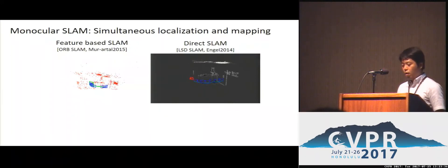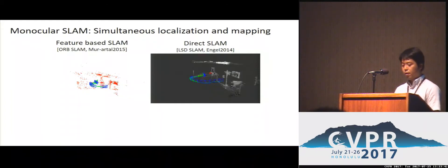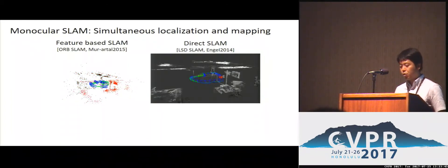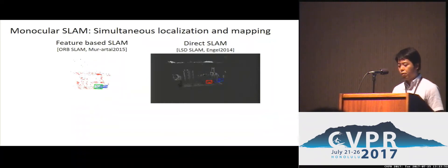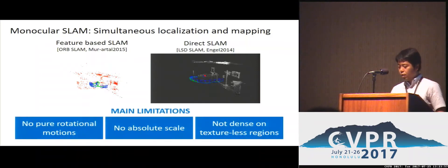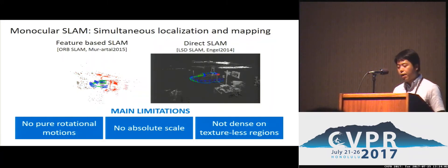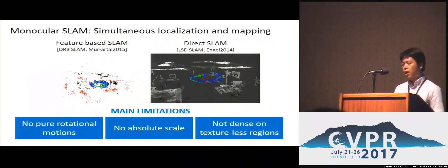Monocular SLAM is one of the main topics in 3D computer vision. It allows estimating camera pose and reconstructing a 3D map from camera motion without any additional sensor. However, since depth estimation in monocular SLAM relies on motion stereo, there are principal limitations. One is that it cannot deal with pure rotation motion and it's hard to estimate absolute scale. Also, the depth on texture regions is basically missing.